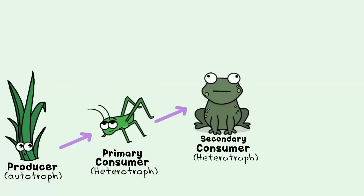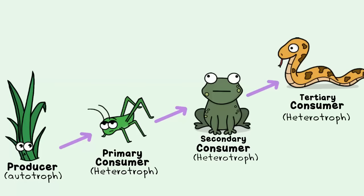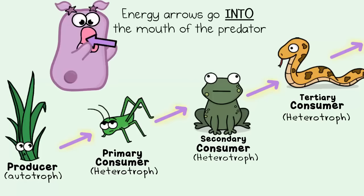The primary consumer is eaten by a secondary consumer, this frog. The secondary consumer is eaten by a tertiary consumer, this snake. And the food chain can keep going. Notice how the arrows are supposed to point in the direction of the one doing the eating, which makes sense because that's the direction of the energy flow.